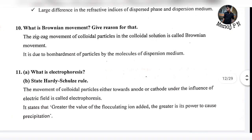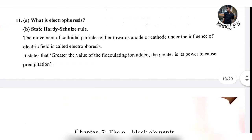What is Brownian motion? Give a reason for it. The random zigzag motion of colloidal particles is called Brownian motion. It is due to the bombardment of colloidal particles by the molecules of the dispersion medium.